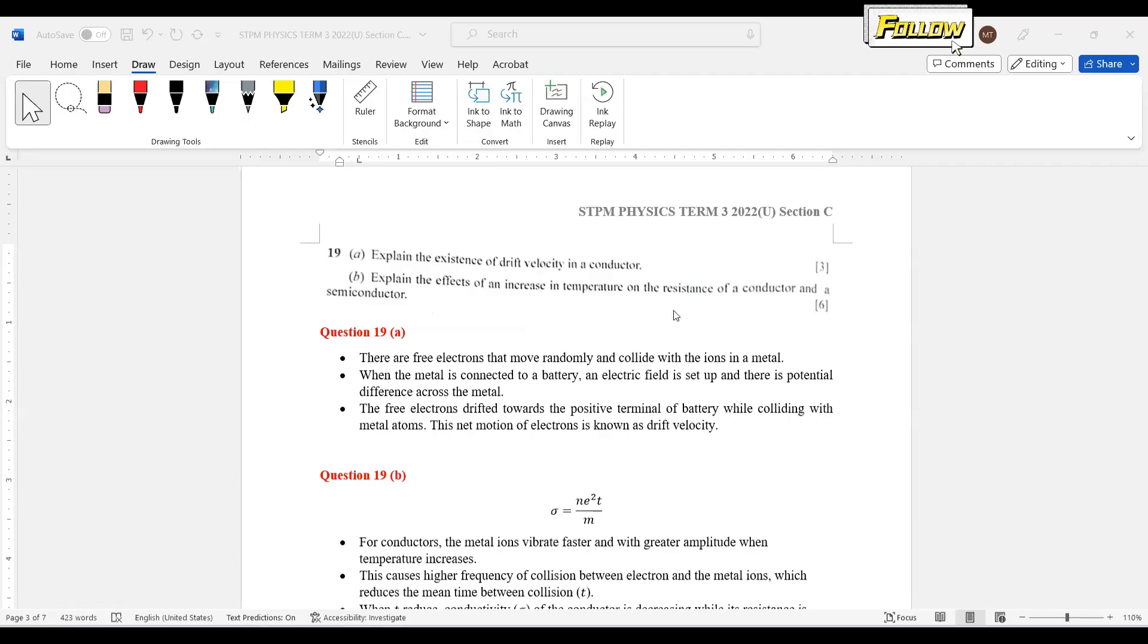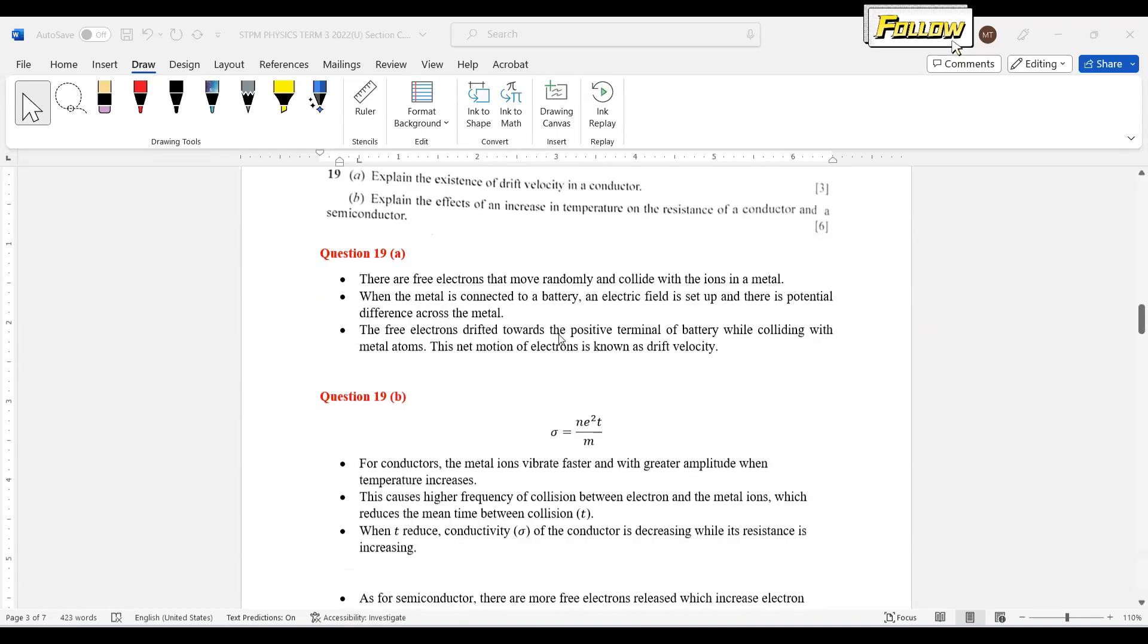We move on to question 19 of Ulangan paper in 2022. The first one is to explain the existence of drift velocity in a conductor, and then to explain the effect of an increase in temperature on resistance of a conductor and a semiconductor. Both questions are already explained in the syllabus, so we just go through it.